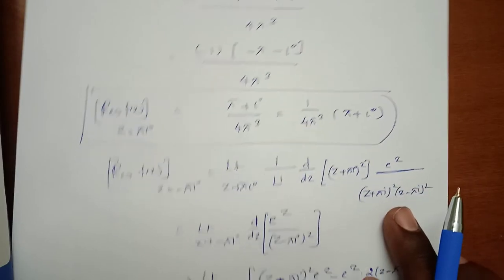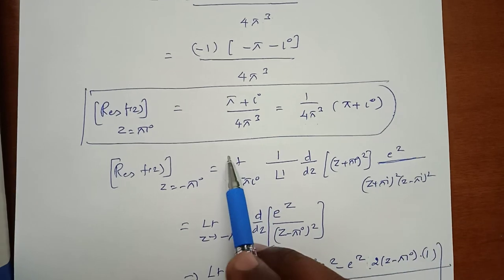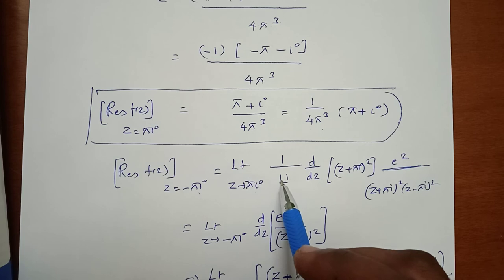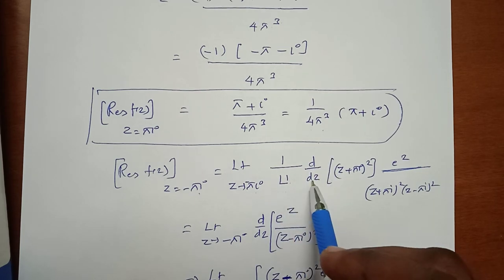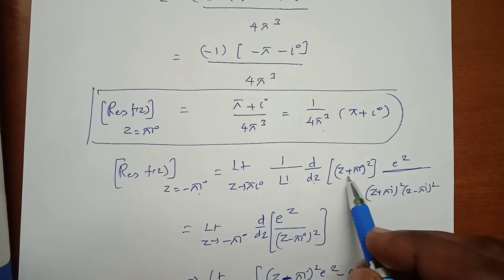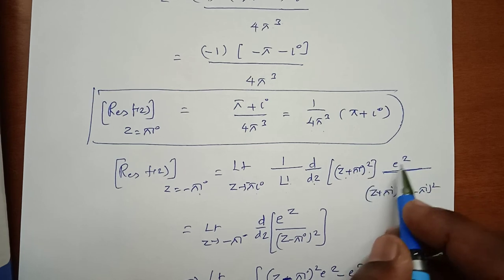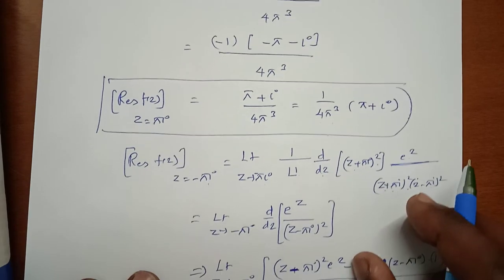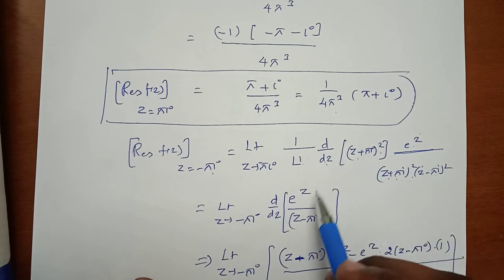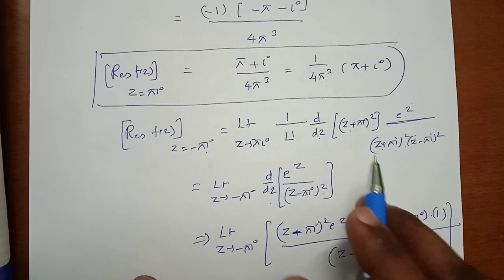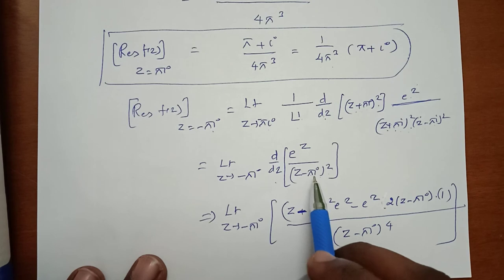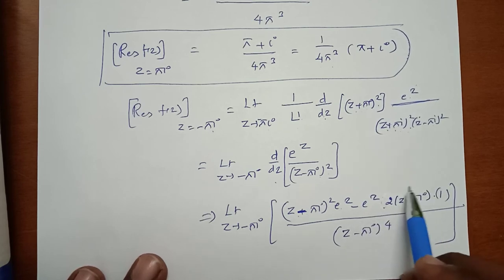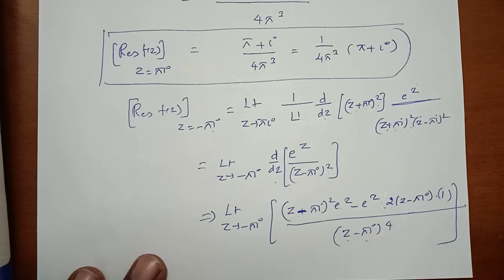Next, since z = −πi also lies inside the circle, we compute the residue at z = −πi (also a pole of order 2). Using the same formula with m = 2: Res = lim(z→−πi) d/dz [(z + πi)² · f(z)]. After cancellation, this becomes lim(z→−πi) d/dz [e^z / (z − πi)²]. Applying the quotient rule: [(z − πi)² e^z − e^z · 2(z − πi)] / (z − πi)⁴.